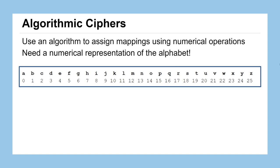In this course, we're going to do that by representing the letter A as 0, B as 1, C as 2, and so on, all the way up to the final letter of the alphabet, Z, being 25.